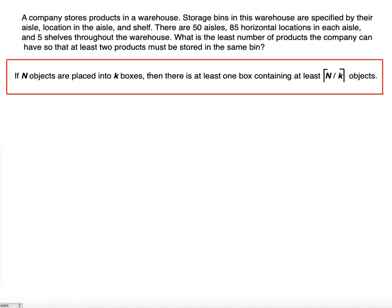Before trying to relate the generalized pigeonhole principle with the given information, you have to understand what you're looking for. So far you have lots of numbers, and in the generalized pigeonhole principle there are only a few of them — n and k. But here you have 50, 85, and 5. So you have to understand how to combine these numbers so that you have fewer numbers to work with.